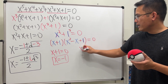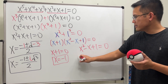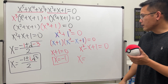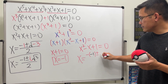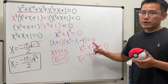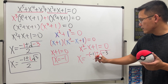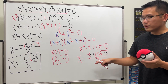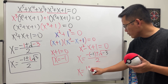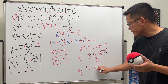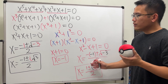Setting x squared minus x plus one equal to zero and applying the quadratic formula: negative b is positive one, plus or minus the square root of negative one squared minus four times one times one, which gives negative three inside again. All over two. So x equals one plus or minus i times the square root of three, all over two.